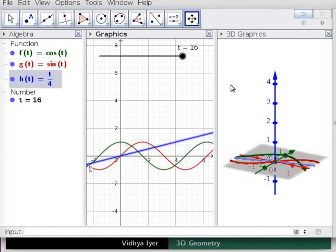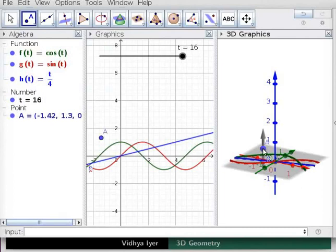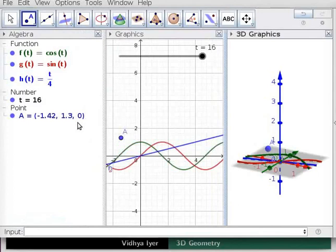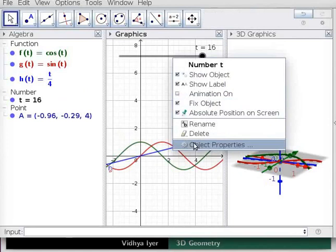Click in 3D graphics view. Click on the point tool and click in the gray area in 3D graphics view. This creates point A. Drag the boundary to see its coordinates properly. In algebra view, double click on A. Change the coordinates to the following. Press enter. The X coordinate of A is cos(T). The Y coordinate is sin(T). And T divided by 4 is its Z coordinate.